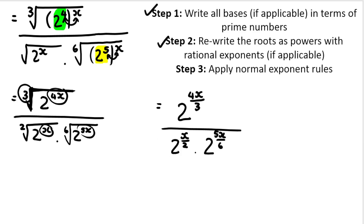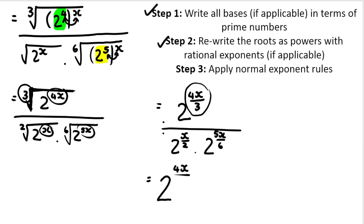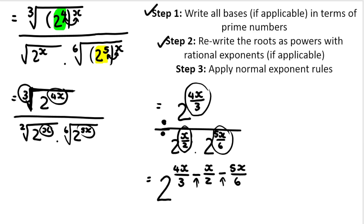Apply normal exponent rules. At this stage you should be familiar with how to do this. We are dividing and multiplying. So we're saying this divided by this and this. If we are dividing and the bases are the same — which they are — we keep the base: 2, and we minus the exponents. So I'm going to take this exponent, 4x over 3, and subtract this exponent, then subtract this exponent, 5x over 6. Why am I minusing exponents? Because I am dividing — when we divide and the bases are the same, we minus the exponents.